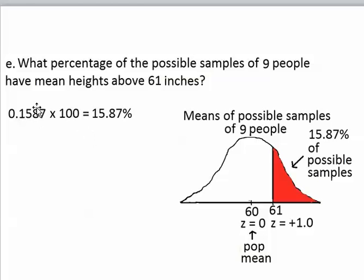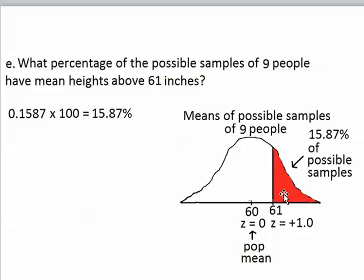So if we multiply our answer by 100, we get this percentage. And what that tells us is that when we randomly select that sample of 9 people from the population, 15.87% of the possible samples of 9 people would have a sample mean above 61 up here.